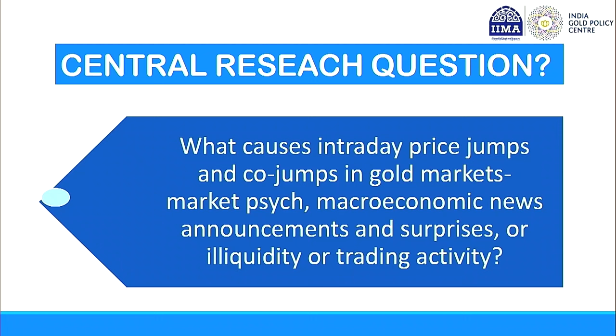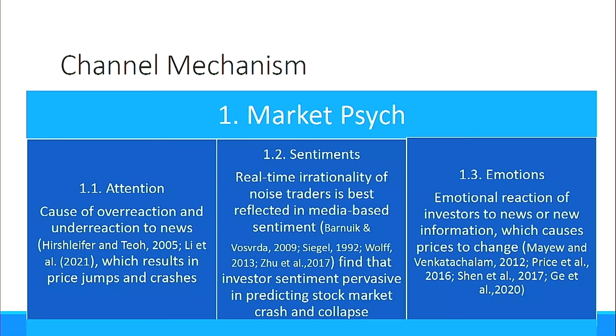The central research question is: what causes intraday price jumps and co-jumps in the gold market — is it market psyche, macroeconomic news, or shocks to illiquidity? My study contributes by identifying the channel mechanism through which new information like news causes jumps — whether the channel is through market psyche, defined as attention, sentiments, or emotions. Previous literature on stock markets shows that investor attention causes overreaction, hence price bubbles or crashes. Sentiment-driven real-time irrationality of noise traders also causes crashes, and a third stream focuses on specific emotional reactions.